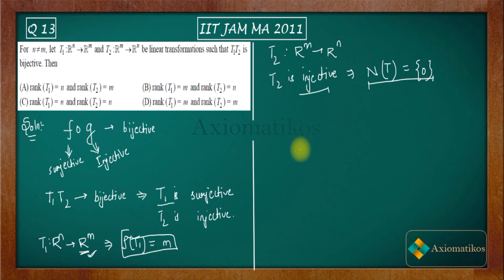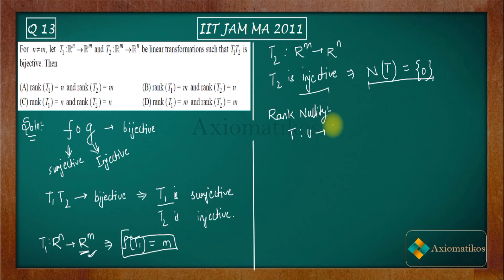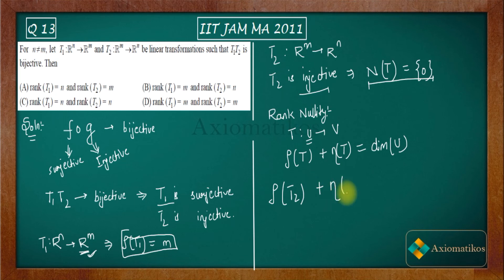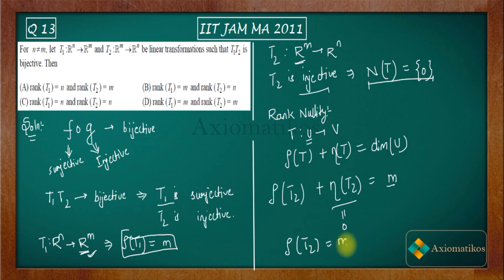Now we apply the rank-nullity theorem, which states that for a transformation T from U to V where U is finite dimensional: rank of T plus nullity of T equals dimension of U. Applying this to T2, the domain is Rm so dimension is M. Since T2 is injective, its nullity is zero, therefore rank of T2 is also M.